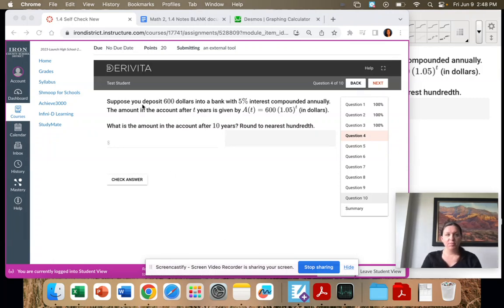Number four, suppose you deposit $600 into a bank account with 5% interest compounded annually. The amount in the account after five years is given by A(T) = 600(1.05)^T in dollars. What is the amount in the account after 10 years? Round to the nearest hundredth.